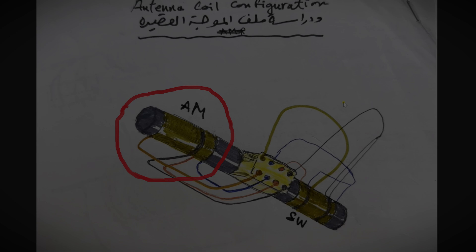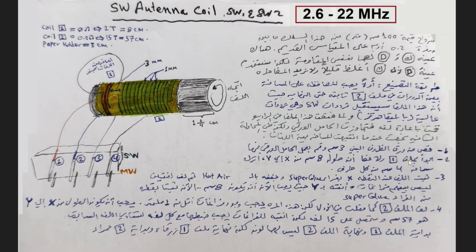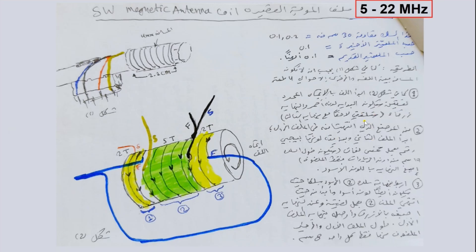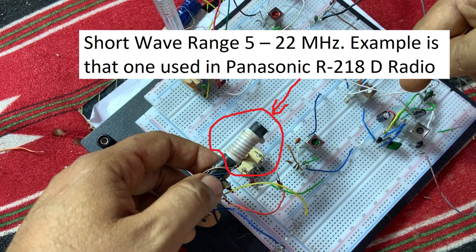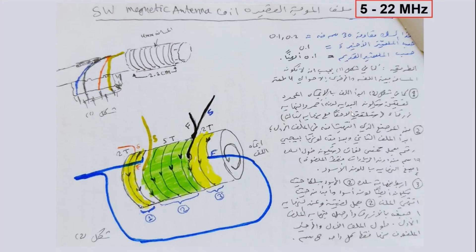Please, it is necessary to watch them all. Now, there are two types of the antenna coil of the shortwave. One of them is the larger one, with a range from 2.6 to 20 megahertz. The other type is the smaller one, with a range from 5 to 22 megahertz. They all have similarities and some differences that we can tackle in this episode.